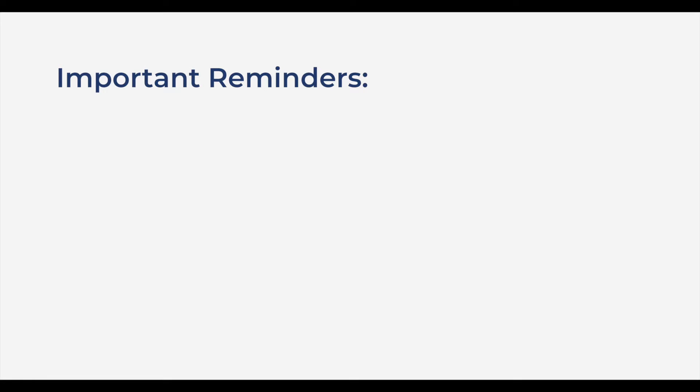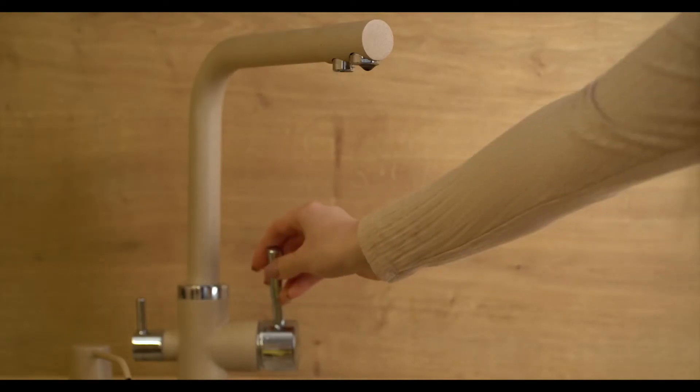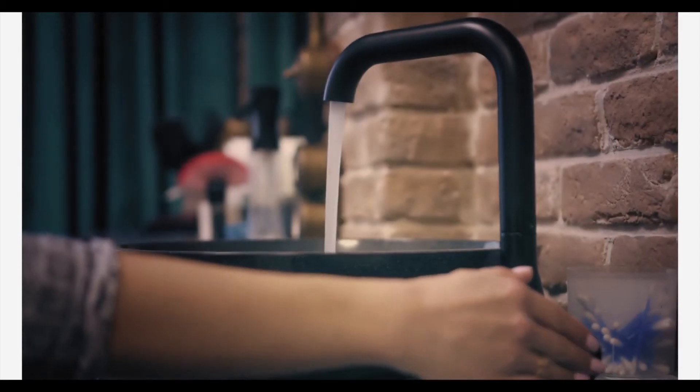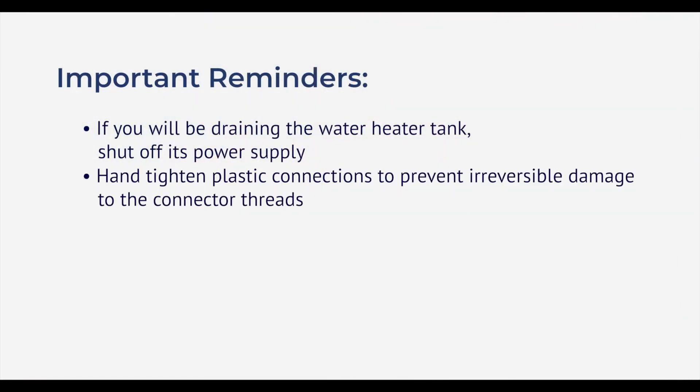Before starting the installation, there are a couple things you need to do. If you will be draining the water heater tank, shut off its power supply. To release the pressure on your water system and drain your pipes, open the faucet on the highest and lowest levels in your home. During the installation, be sure to hand tighten all the plastic connections to prevent irreversible damage to the connector threads. Teflon tape may be used on the connections that do not use an O-ring seal.